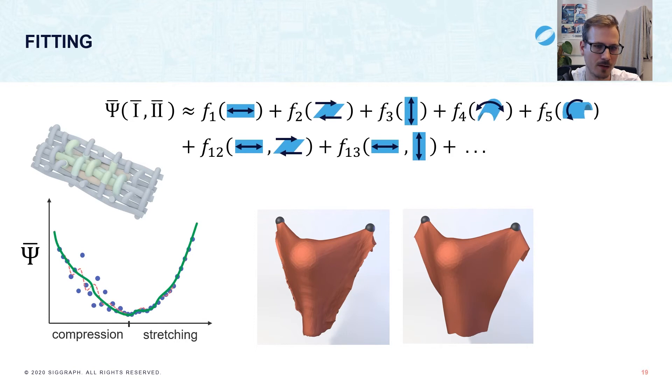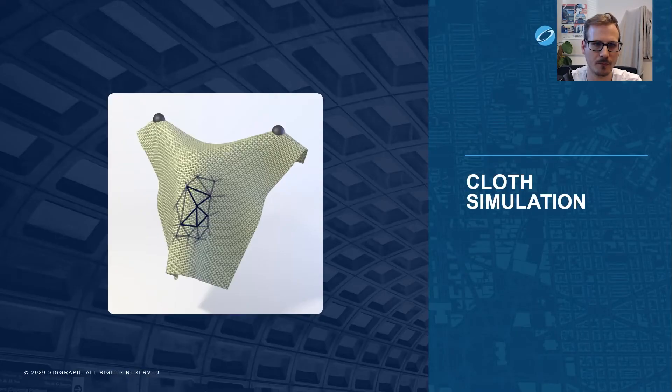Fitting the data for one pattern only takes a couple of seconds. You can find much more thorough information on our fitting heuristics in the paper and supplementary. This completes homogenization from yarn level simulations to a cloth scale energy density function, which you can now try to use in a cloth solver.